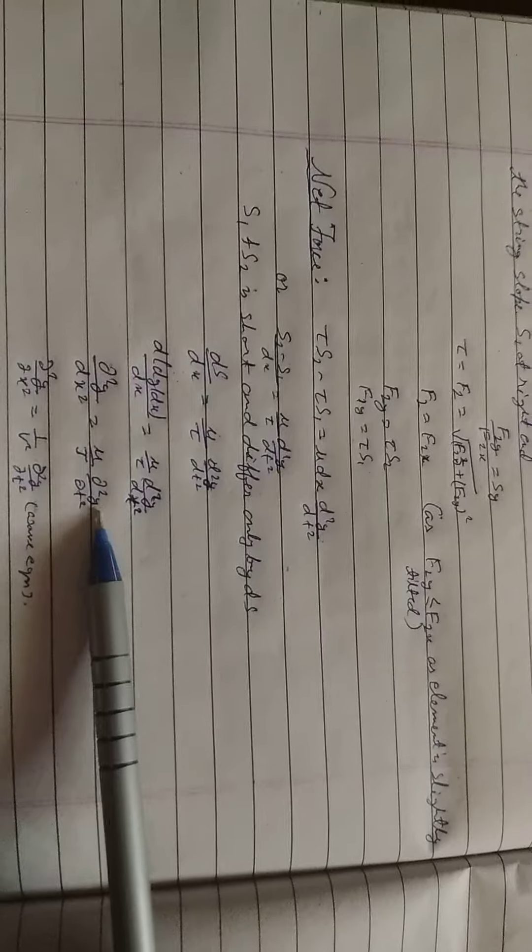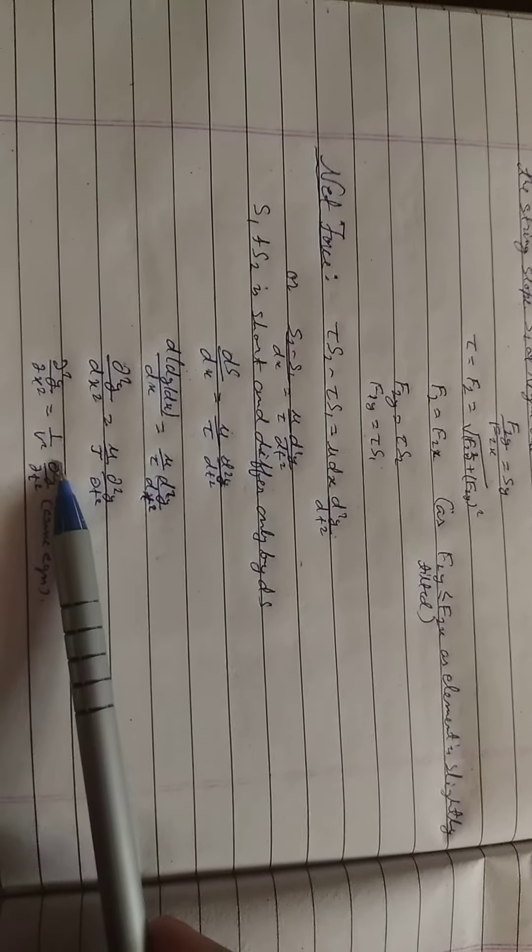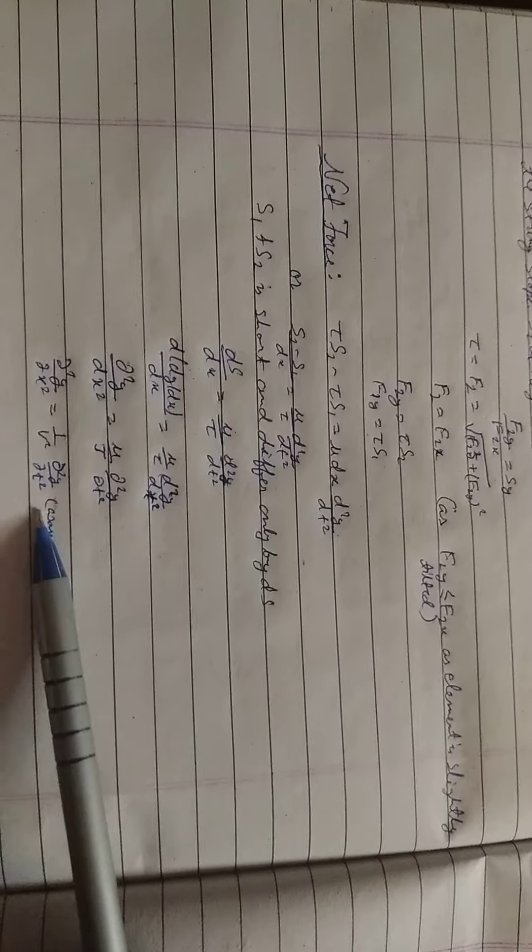d square y by dx square equal to 1 by v square d square y by dt square. This is the wave equation.